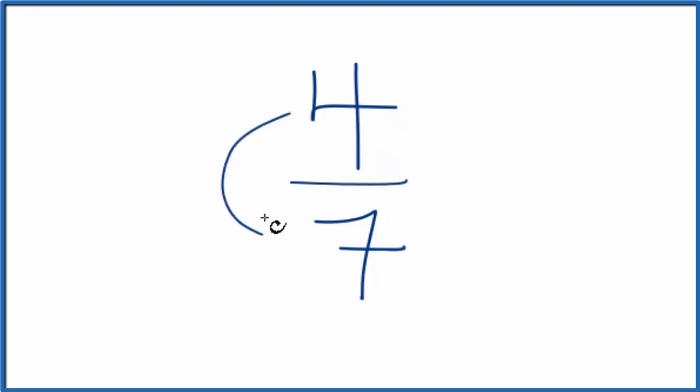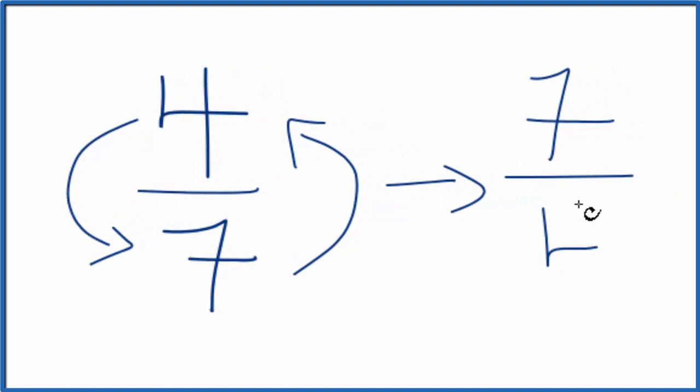So the four, that's the numerator, that'll come down here, and seven, the denominator, that goes up top. So we're going to end up with seven as our numerator, four as the denominator.